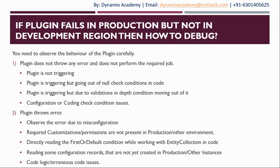Another type of situation where the plugin will throw an error is when the required customizations or permissions are not present in production or any environment other than development. Sometimes the error may be due to customizations that your code is reading not being found on the production environment, or the user context in which the plugin is running not having sufficient privileges. In those situations the plugin will throw an error. A third kind of situation is if you are directly using the FirstOrDefault method when working with entity collections in code — developers often assume records will be present — but the data being retrieved returns no values, and the plugin may throw an error.